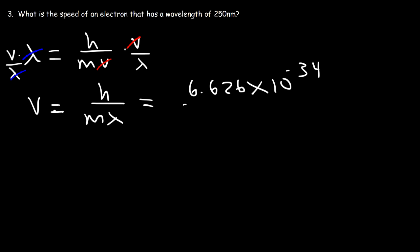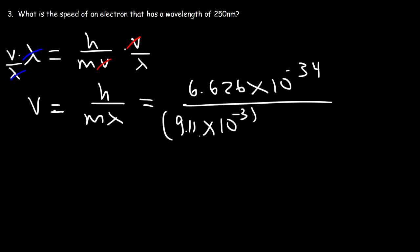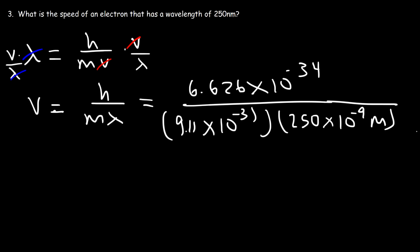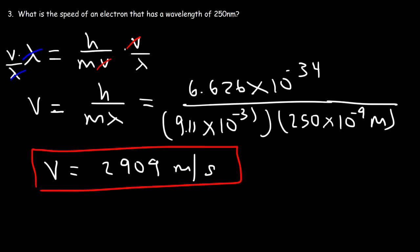The mass of the electron is 9.11 times 10 to the minus 31 kilograms. The wavelength needs to be in meters, not nanometers, so we replace nanometers with 10 to the minus 9 meters. The speed of this electron comes out to 2,909 meters per second, which is pretty slow for a typical electron.